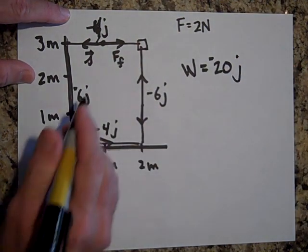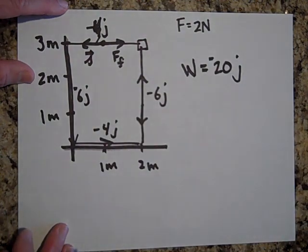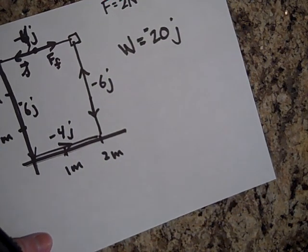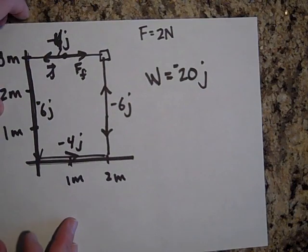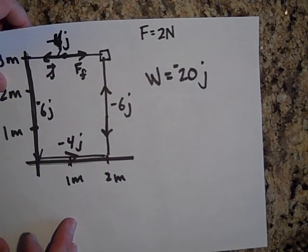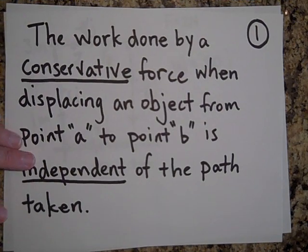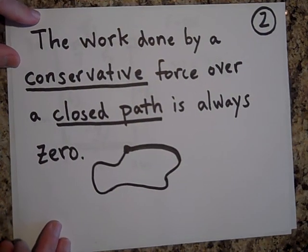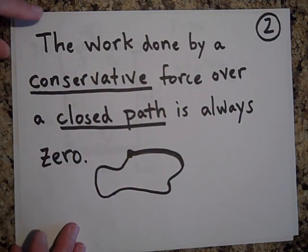Since friction did −20 joules of work around a closed path — not zero — it cannot be a conservative force. To summarize: there are two properties of conservative forces. First, the work done displacing an object from point A to point B is independent of the path taken. Second, the work done over a closed path is always zero. Thanks a lot.